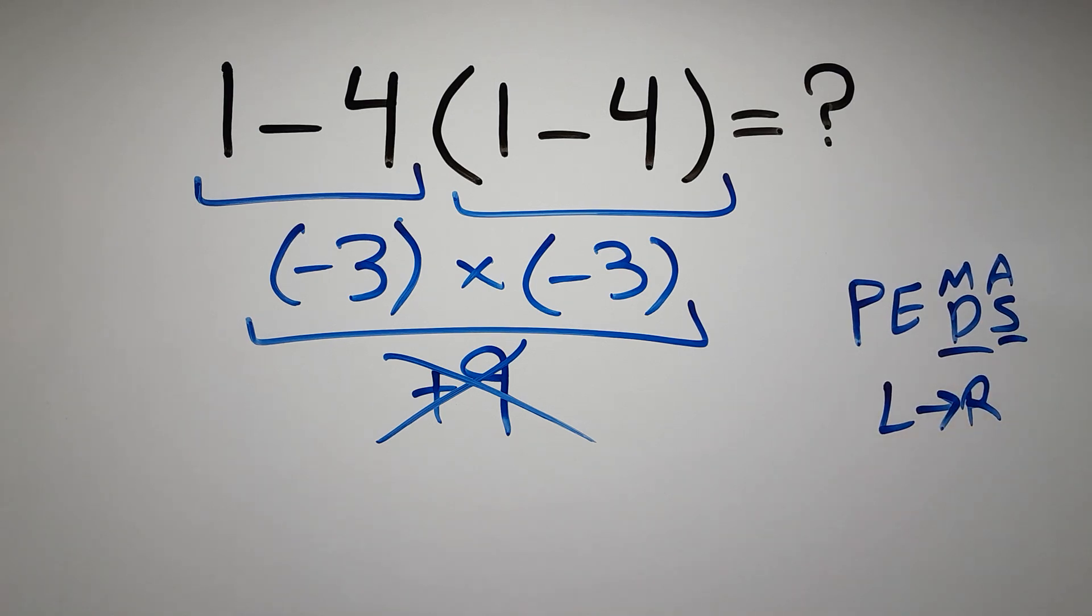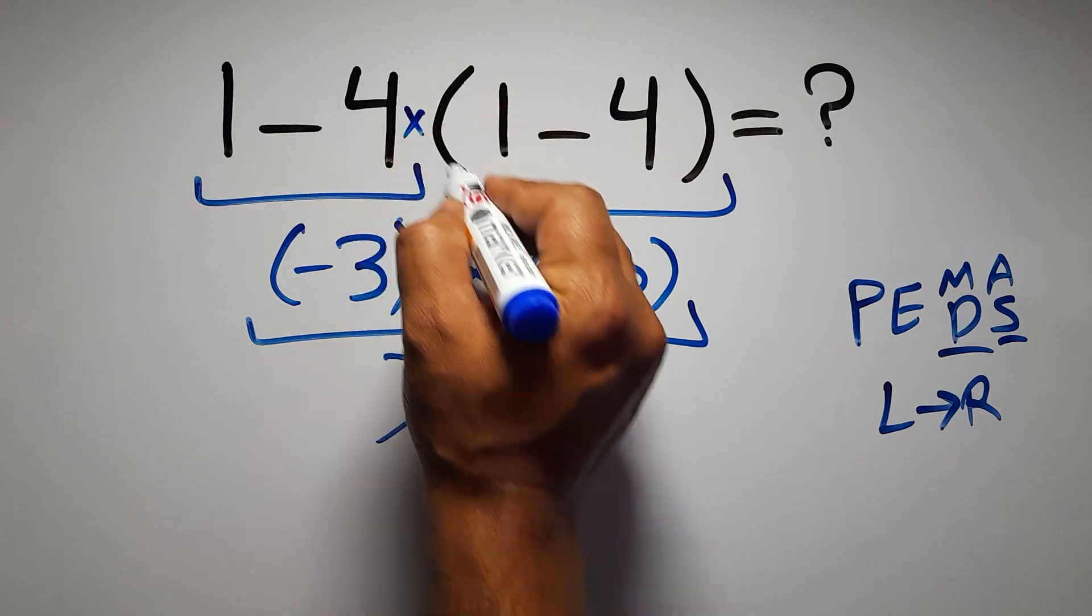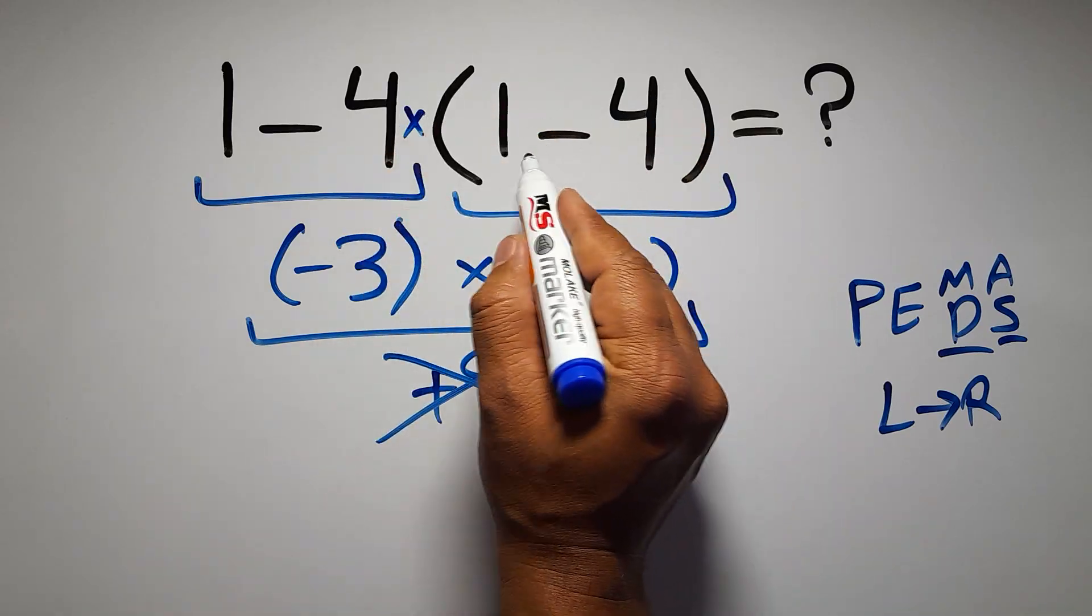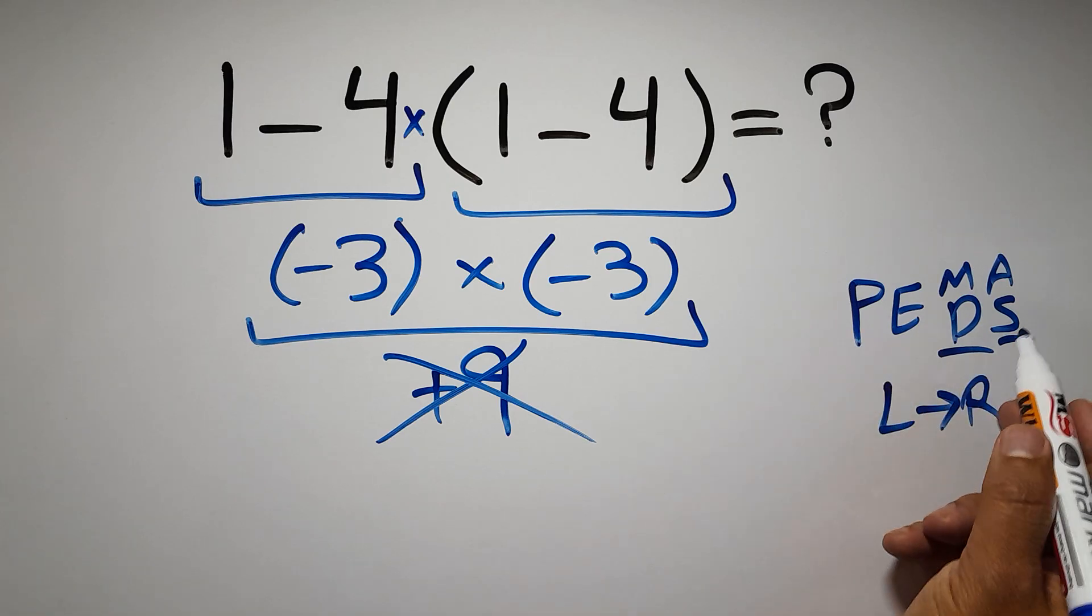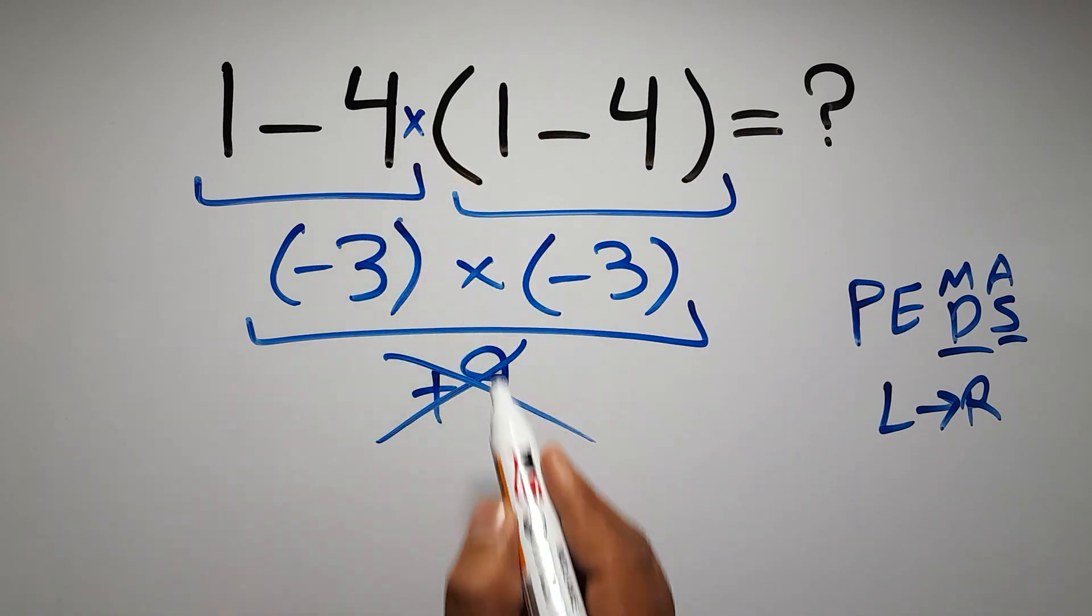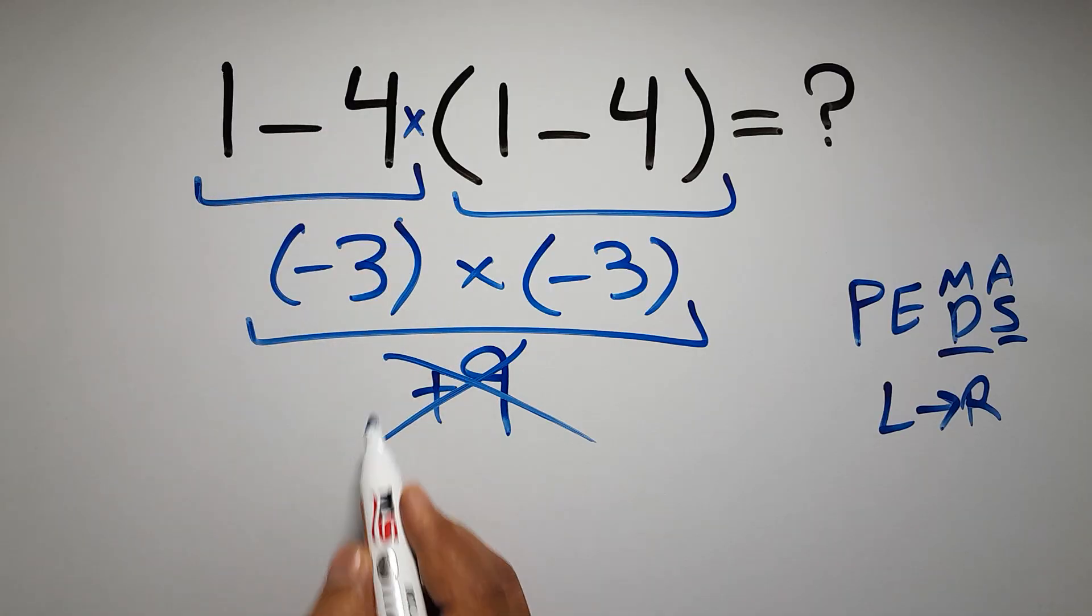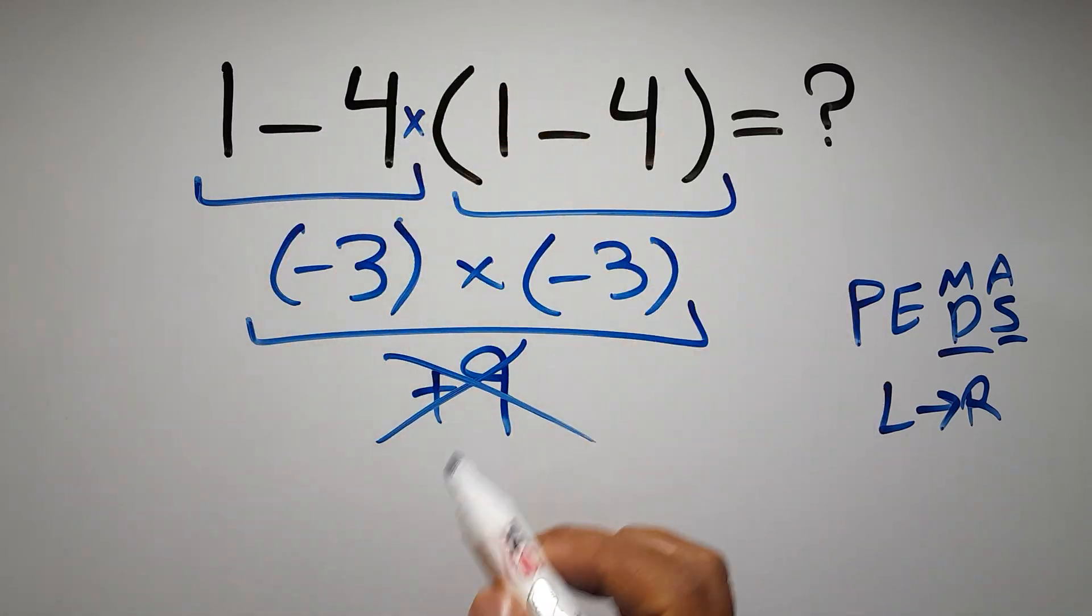In this expression we have one subtraction, one multiplication, and one parentheses. Inside this parentheses we have one subtraction. So according to PEMDAS, first we have to do this parentheses, then this multiplication, and finally this subtraction. If we do this subtraction before this multiplication or this parentheses, it is wrong.